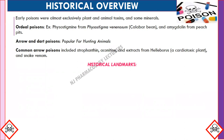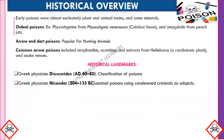Regarding historical landmarks, Greek physician Dioscorides classified poison into three groups: animal, vegetable, and mineral. Experimental toxicology began with another notable physician, Nicander, who experimented with animal poison using condemned criminals as subjects.